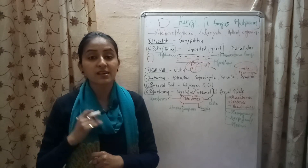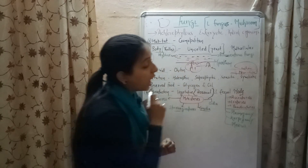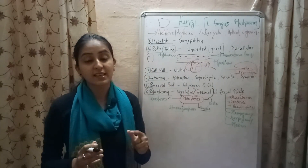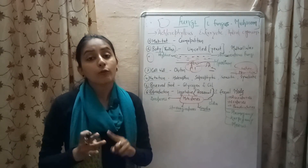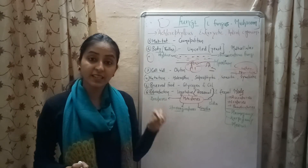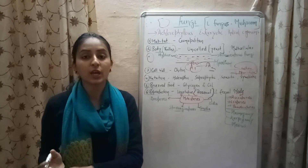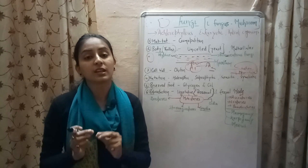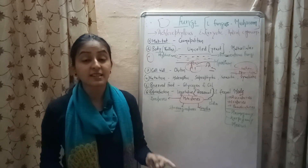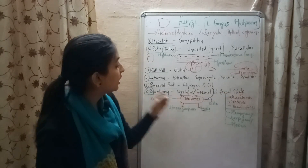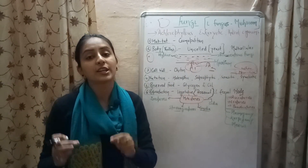जब fungi higher plants के साथ symbiotic relationship show करते हैं, उस time fungi को बोलते हैं mycorrhiza. Fungi higher plants को water as well as nutrients provide करवाते हैं, और higher plants in return fungi को खाना provide करवाते हैं. So, the symbiotic relationship between algae and fungi is known as lichen, whereas the symbiotic relationship between higher plants and fungi is known as mycorrhiza. Fungi are heterotrophic — they can be saprophytic, parasitic, or showing symbiotic relationship.